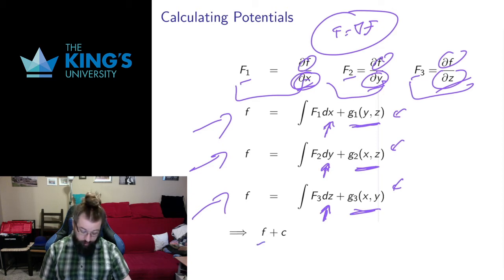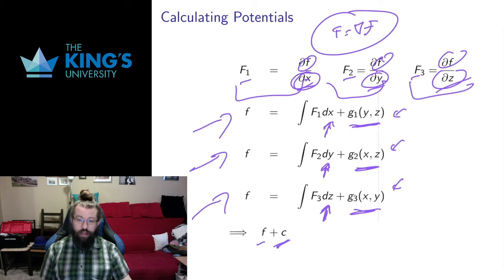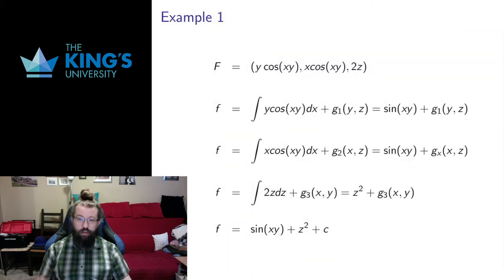If this works, we get a function, and the constant left over once we put all the pieces together is just an ordinary constant of integration. This is a nice result: conservative vector fields come from potentials, and the potentials can only differ by a constant. So if I have two different potentials for the same field, those two potentials only differ by an actual constant. Let me give an example of how to actually do this three-integral equation method.